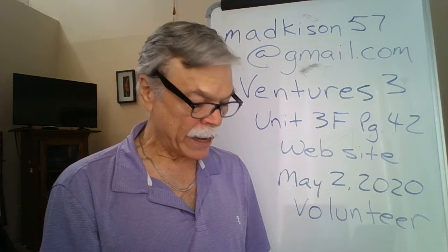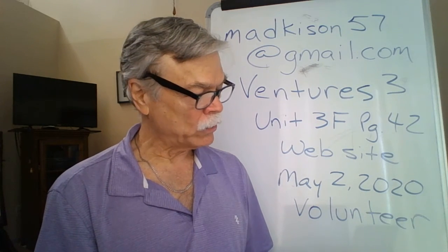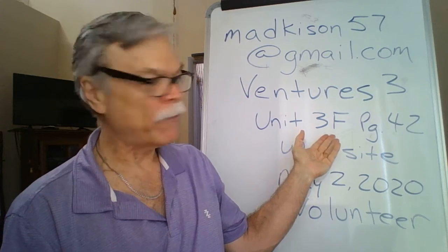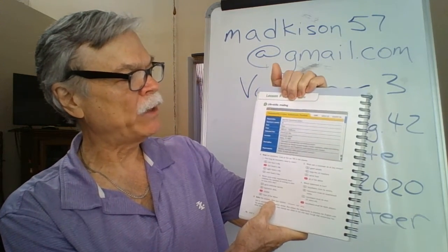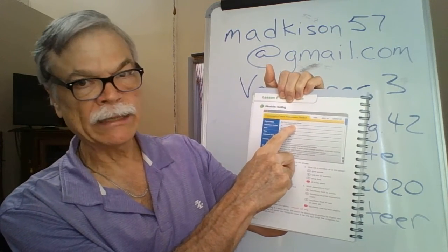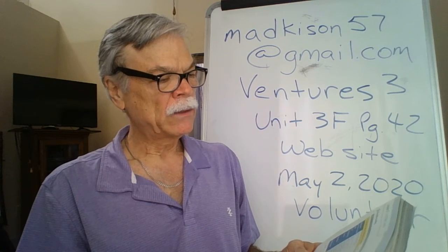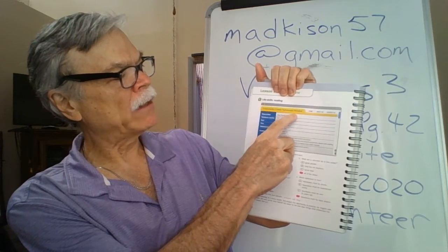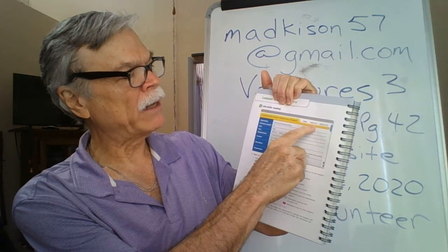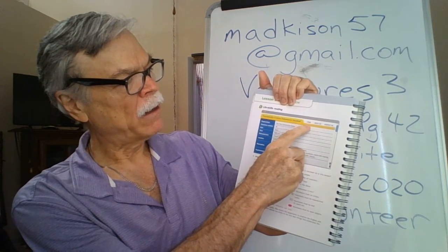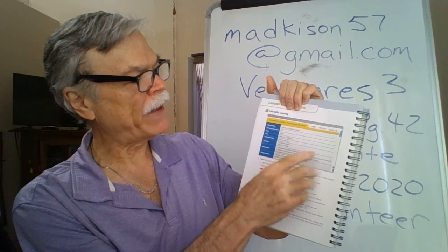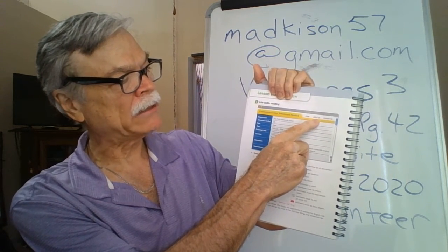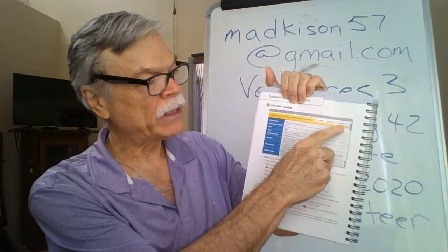Many Americans volunteer at community centers, and we're going to look at a website on page 42. In Unit 3F, we're going to read about the Oak Park Community Center. This is the Life Skills Reading, Lesson F. At the top it says 'Community Center Volunteers Needed.' Then it says Home, About Us, and Contact Us. You can put your cursor on Home to go to the Home page, click About Us to find out more about the Oak Park Community Center, or click Contact Us for contact information.